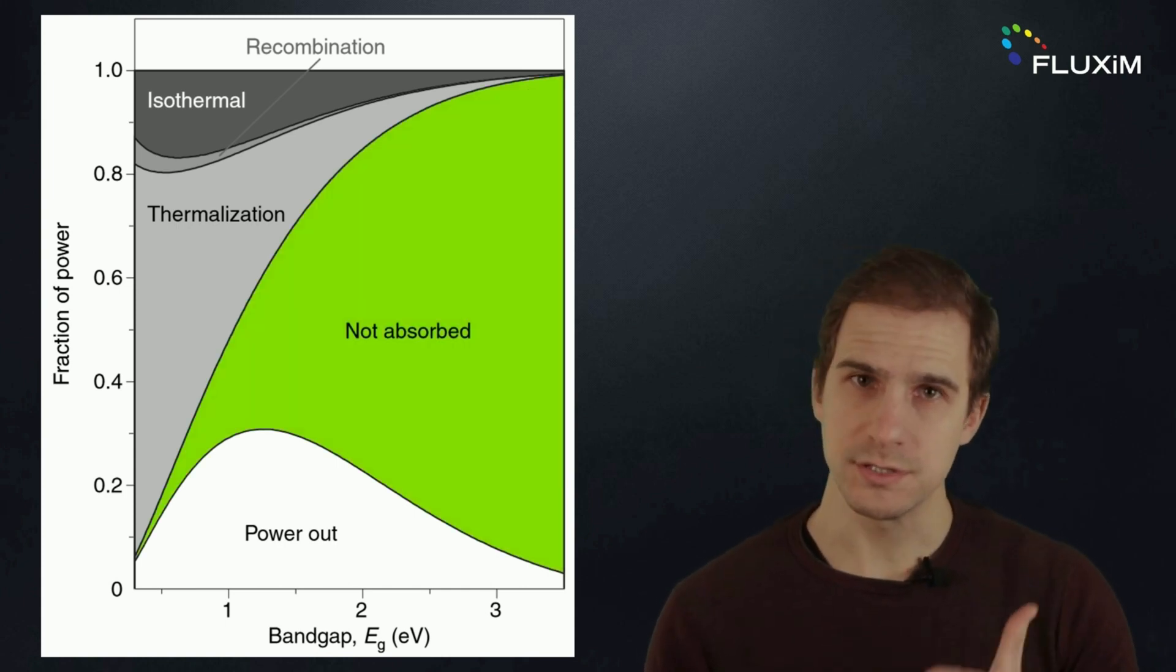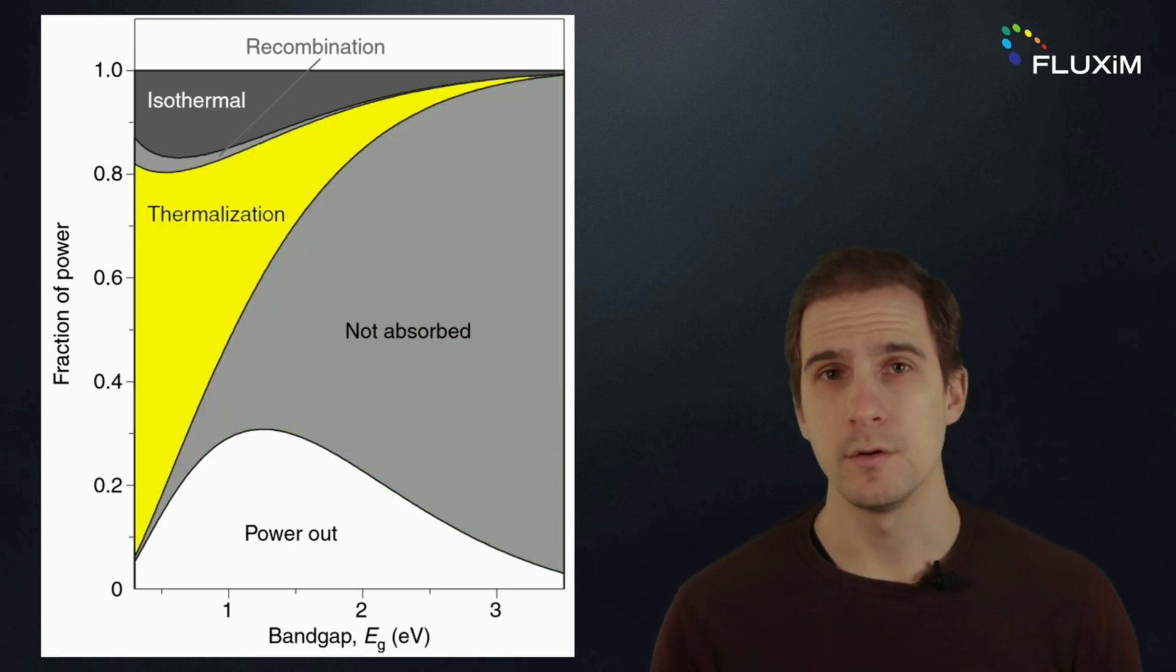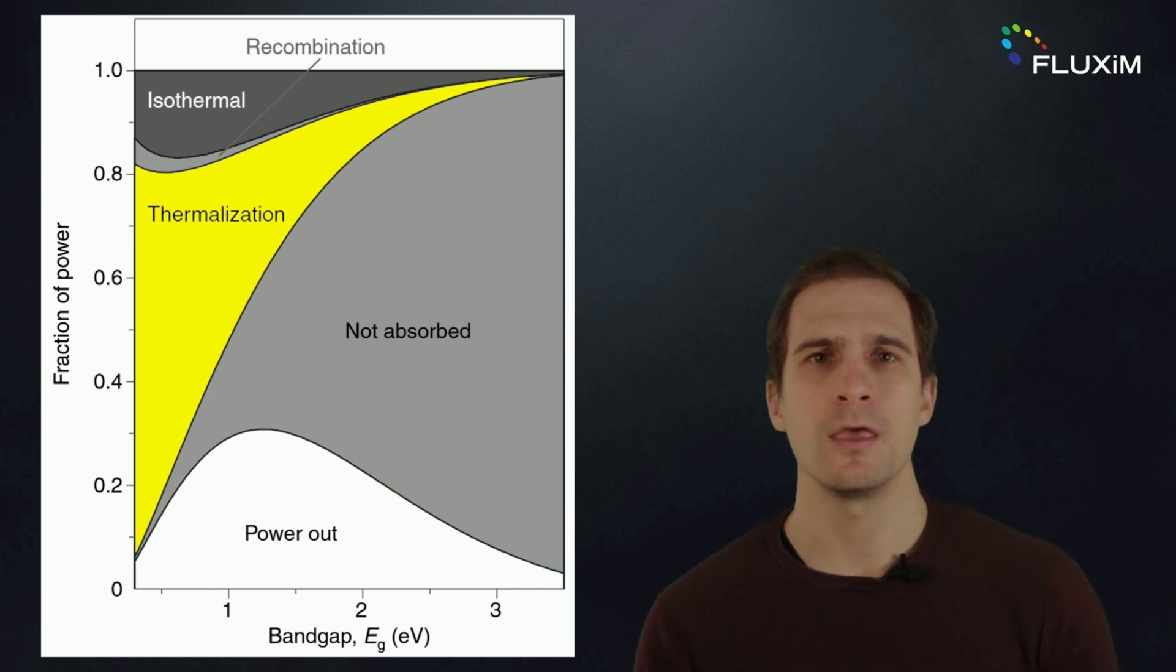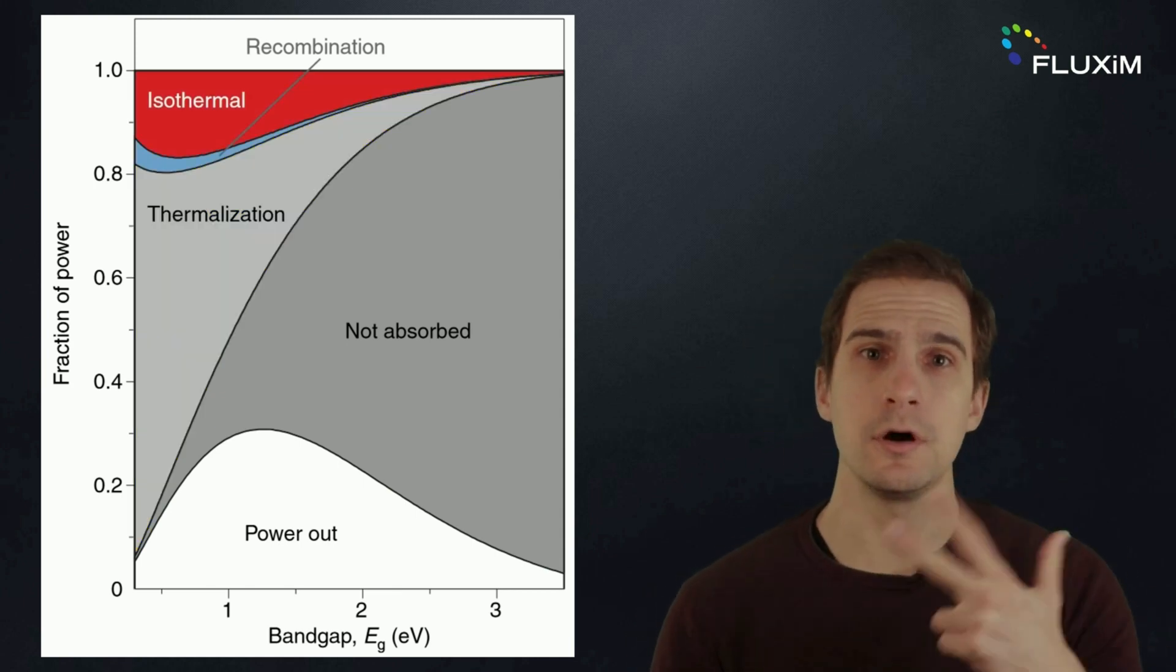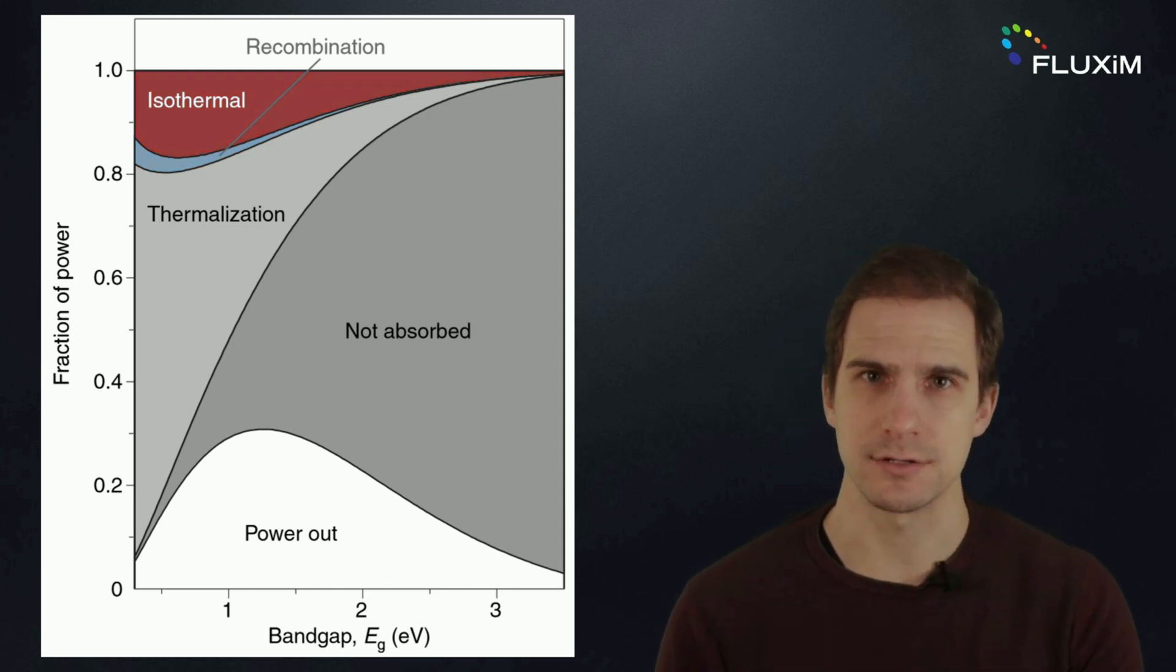Optical, where photons with lower energy than the band gap are not absorbed. Thermal, where photons with more energy than the band gap are absorbed and converted into heat. Electronic, where electron-hole pairs are lost if not collected at the electrodes.